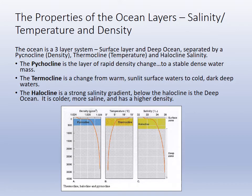This shows the properties and density — you can see how the density increases drastically through the pycnocline. The temperature drops during the pycnocline and the salinity rises during the pycnocline. So the pycnocline is that area of rapid changes — cline: pycno, thermo, halo.